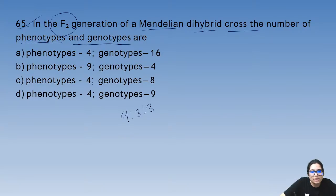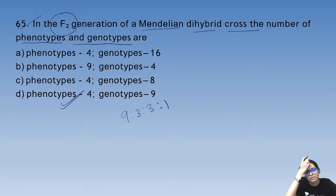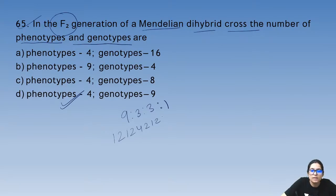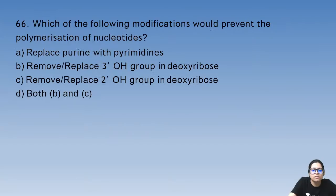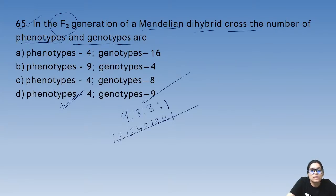Question 65: the phenotypic ratio in a dihybrid cross is 9:3:3:1, so the number of phenotype types will be 4 and the number of genotype types will be 9.